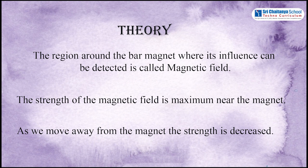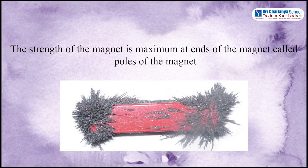The strength of the magnetic field is maximum near the magnet. As we move away from the magnet, the strength is decreased. The strength of the magnet is maximum at the ends of the magnet called poles of the magnet.